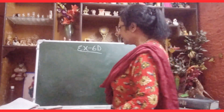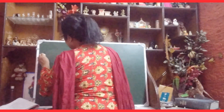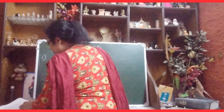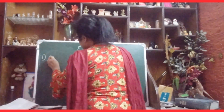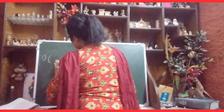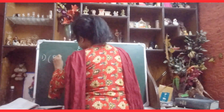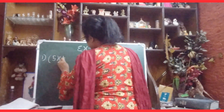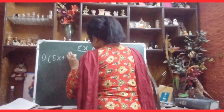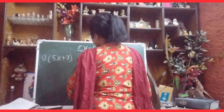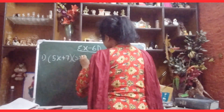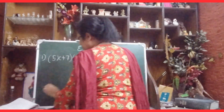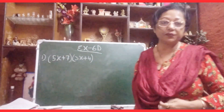Let us start. Sum number 1: we are given 5x plus 7 and 3x plus 4. These are the two expressions given.